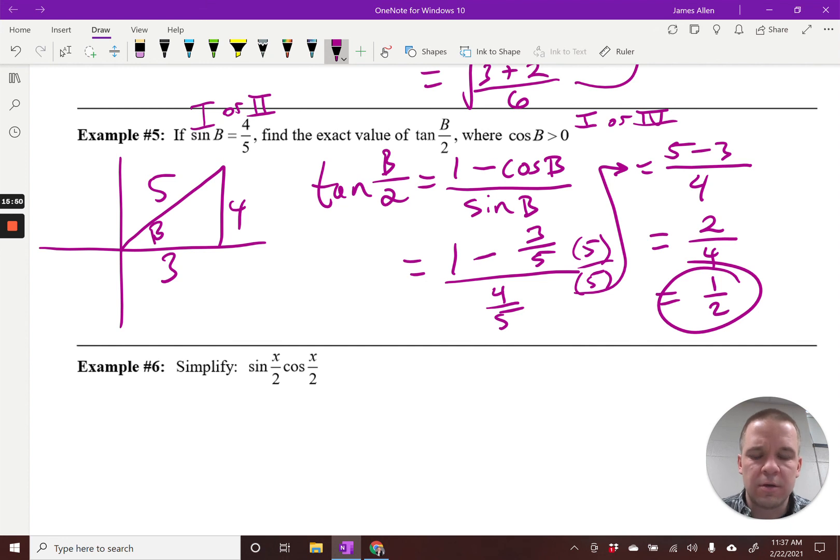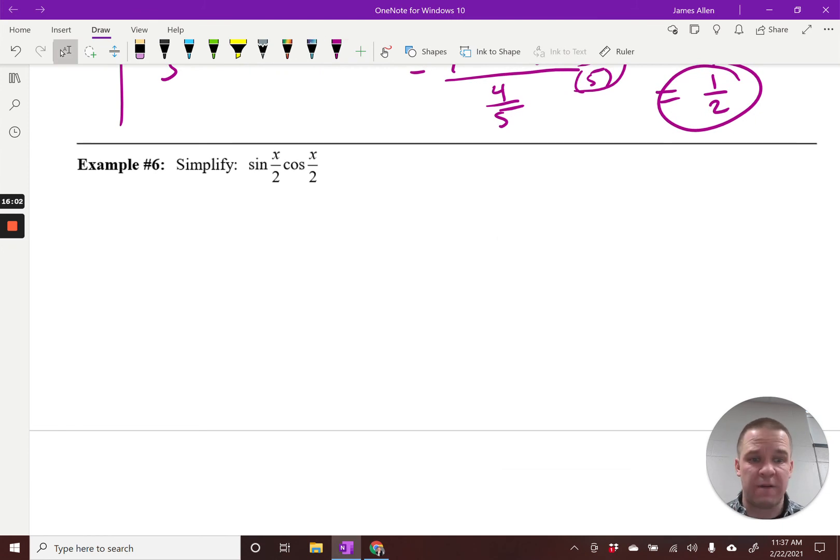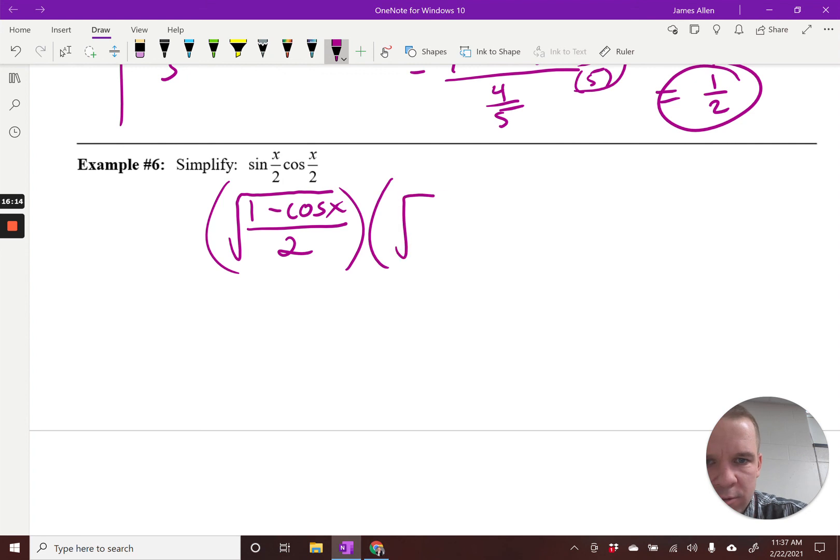All righty, simplify sine of x over 2 times cosine of x over 2. So we're dealing with two half-angle formulas here. So perhaps, perhaps I write out my half-angle formula. So we'll start with square root. 1 minus cosine of x over 2 square root 1 plus cosine of x over 2. Okay, cool, cool, love it, love it. Now, when we multiply these together, I can put everything all into 1 square root, right? Okay, let's do that.